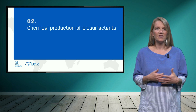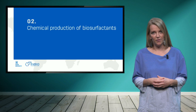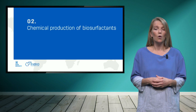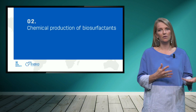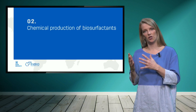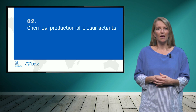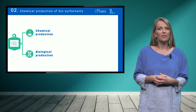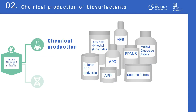Now, there are several options to produce biosurfactants. We can mainly make the distinction between either chemical or biological production routes. Examples of chemically produced biosurfactants are, for example, APGs, SPANS, sucrose esters, etc.